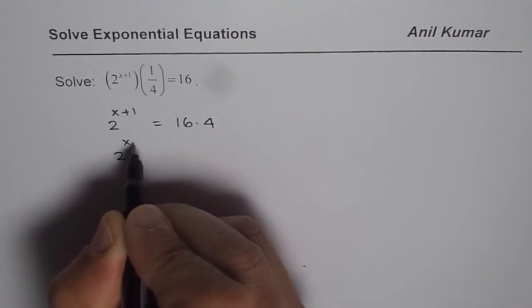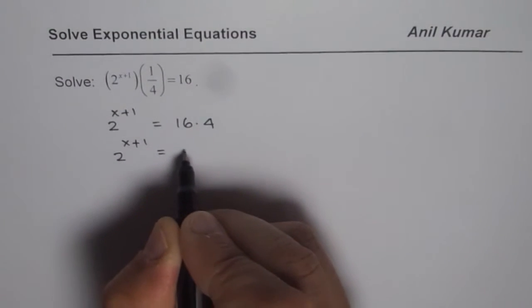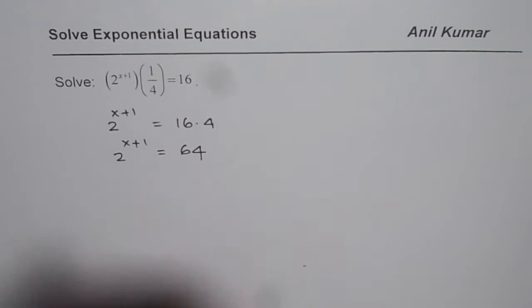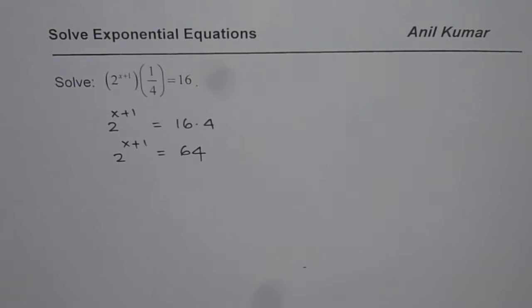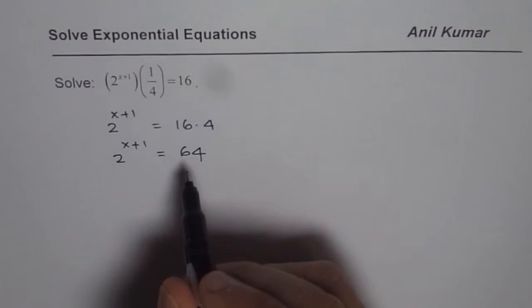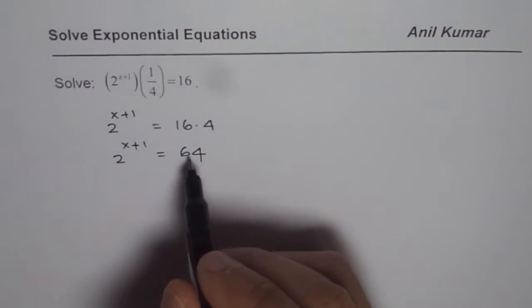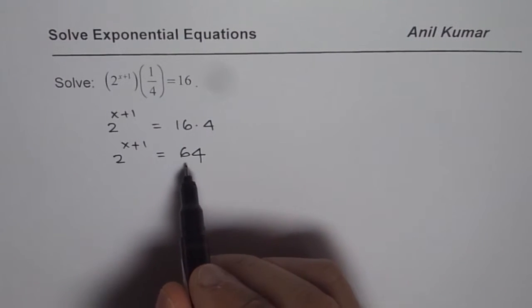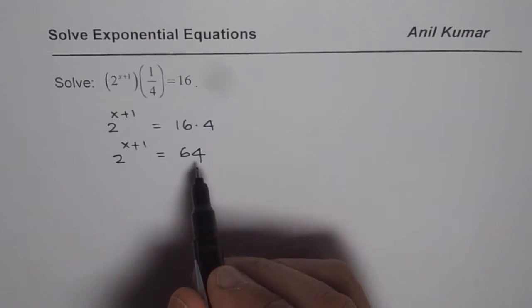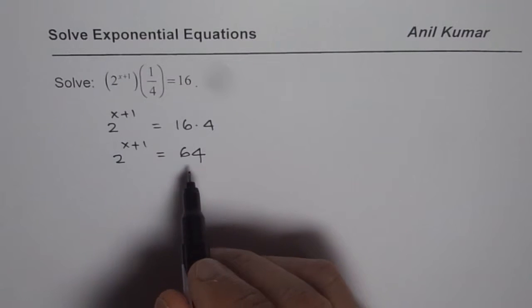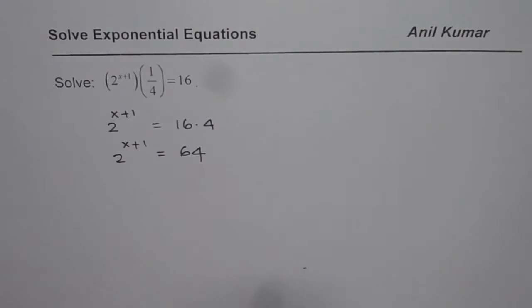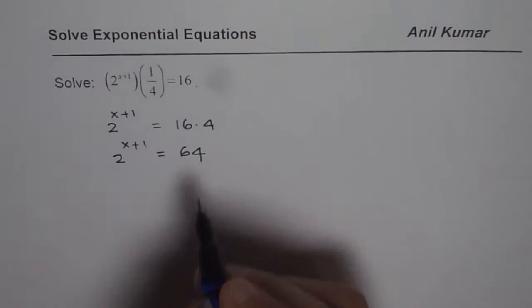That is to say 2 to the power of x plus 1 equals 64. And now we should write 64 as a number with base 2 and some other exponent. So you have to figure out 2 to the power of what is 64. That is the question you should be asking at this stage.